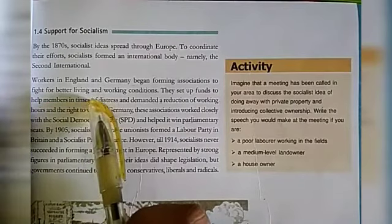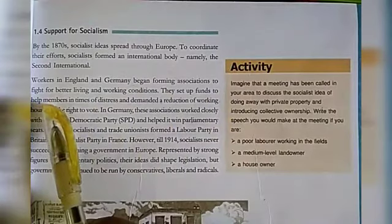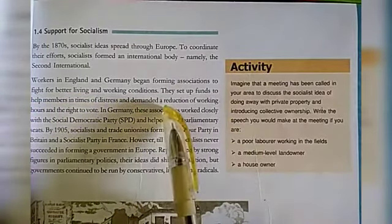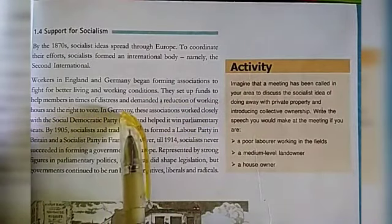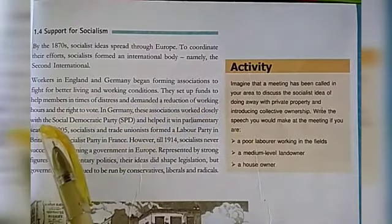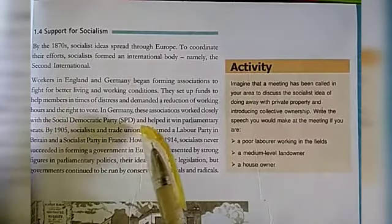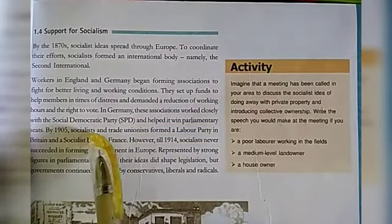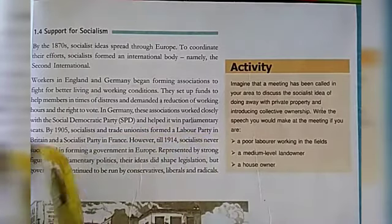Workers in England and Germany began forming associations to fight for better living and working conditions. They set up funds to help members in times of distress and demanded a reduction of working hours and the right to vote. In Germany, these associations worked closely with the Social Democratic Party SPD and helped it win parliamentary seats.